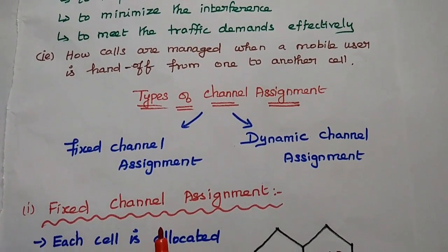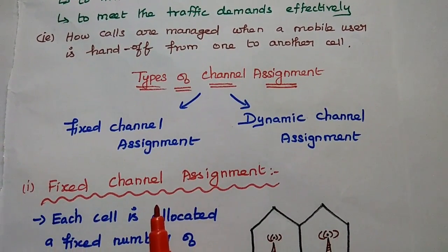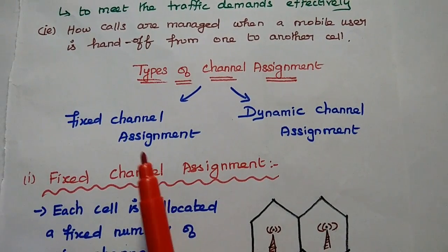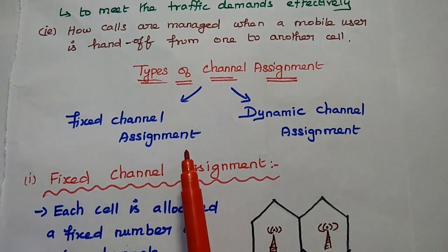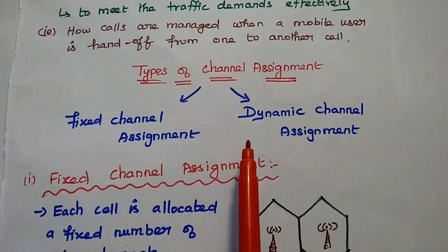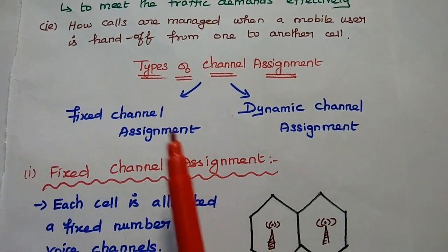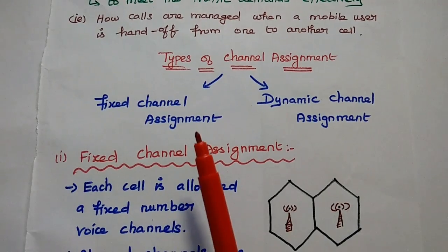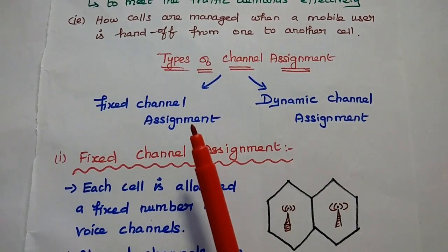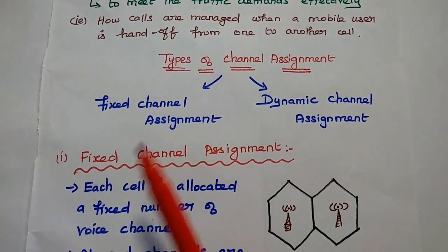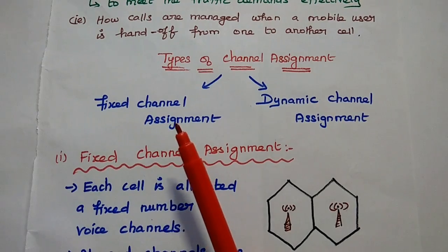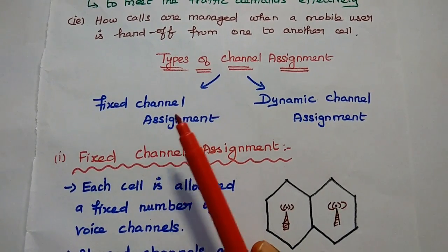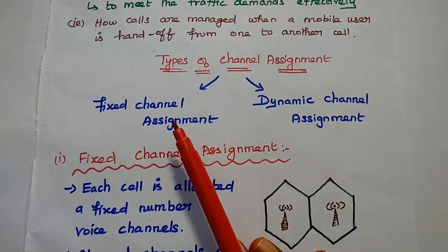There are two types of channel assignment strategies available in mobile communication. One is fixed channel assignment, and the next one is dynamic channel assignment. In fixed channel assignment, each cell is allocated with a fixed number of voice channels, so the number of channels is predetermined — a predetermined set of frequency channels are assigned permanently.